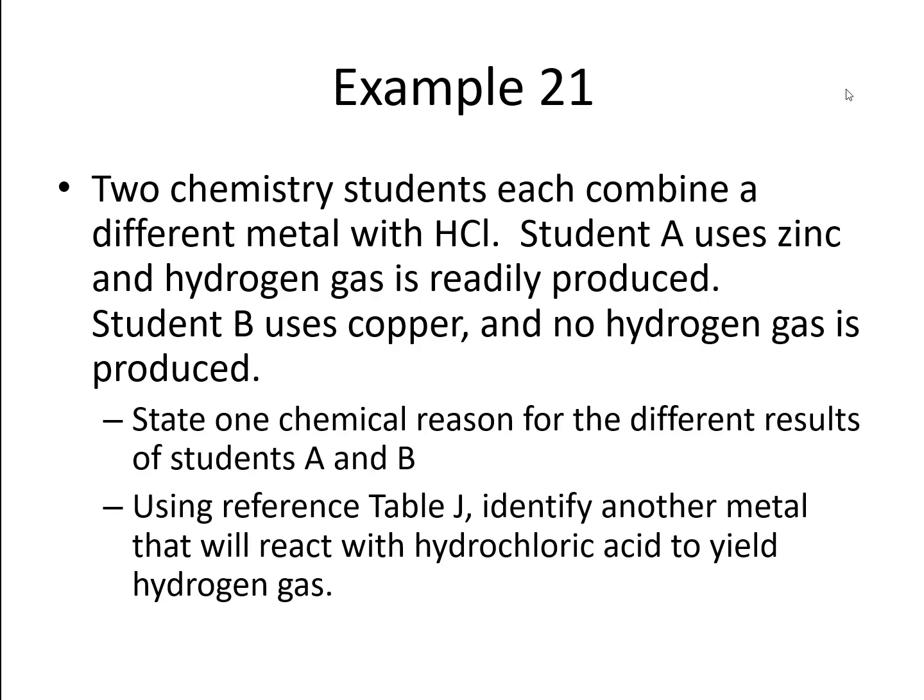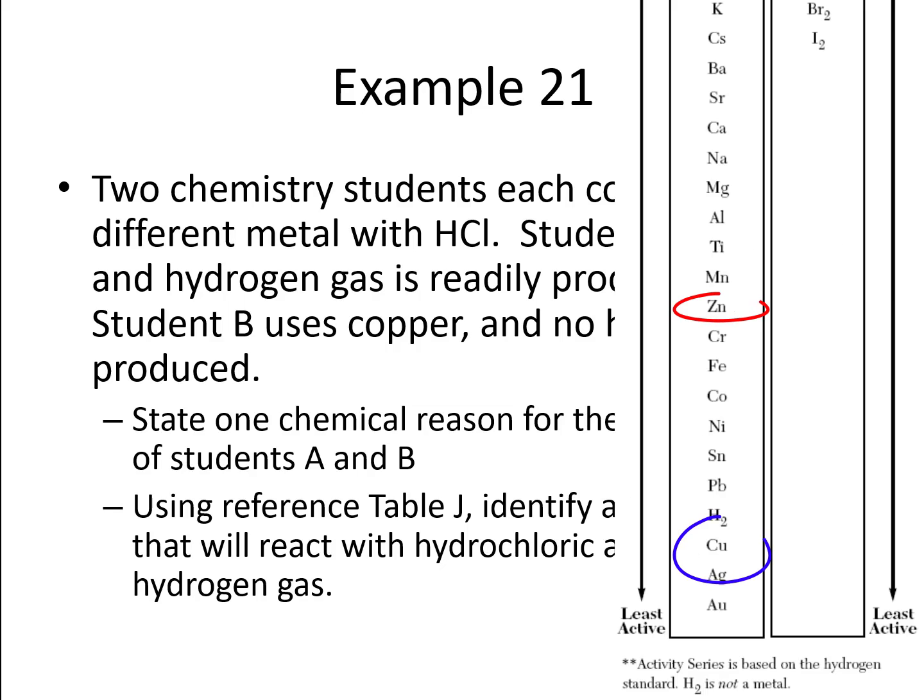Alrighty, so let's attack the first question. State one chemical reason for the different results of students A and B. Well, it could be as simple as student A used zinc, zinc is more reactive than copper according to Table J. Or that student B used copper, which is much less reactive than zinc, which was used by student A. You could think about it either way.